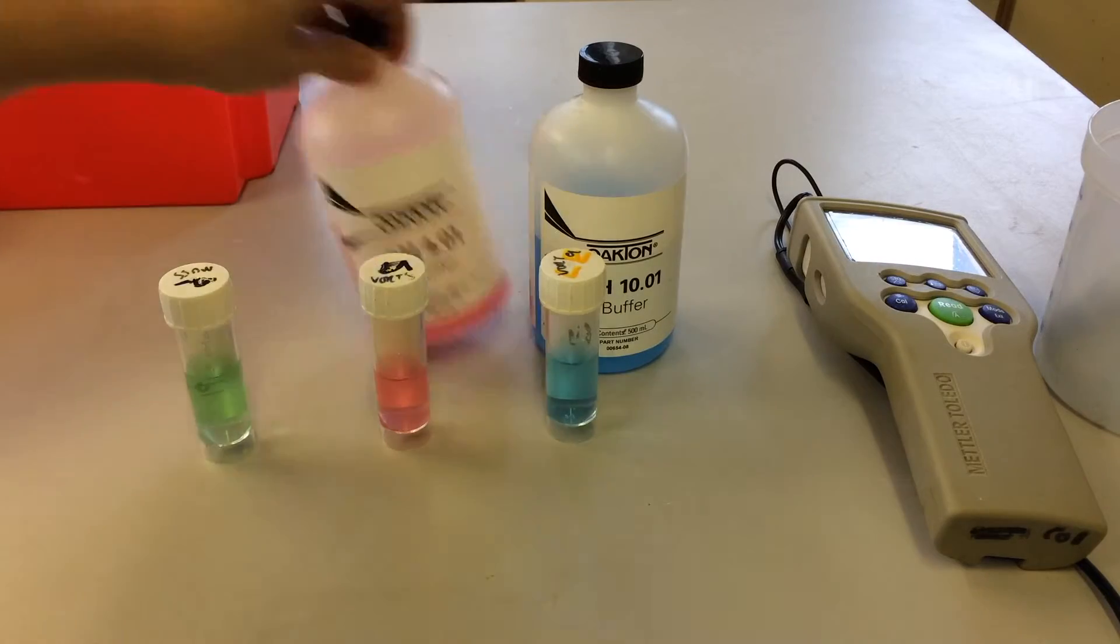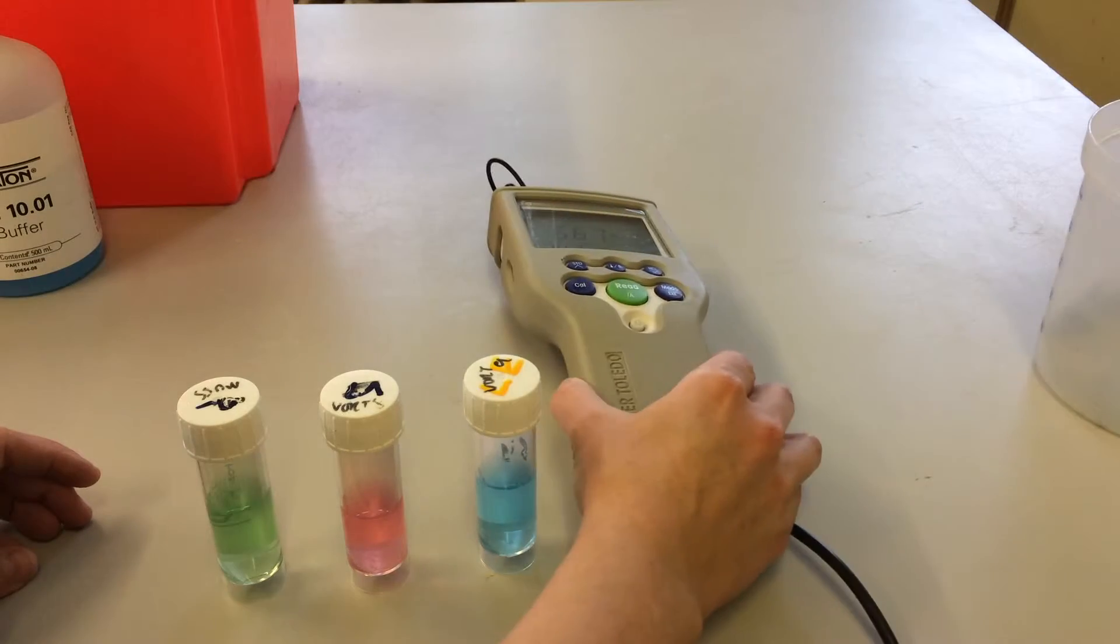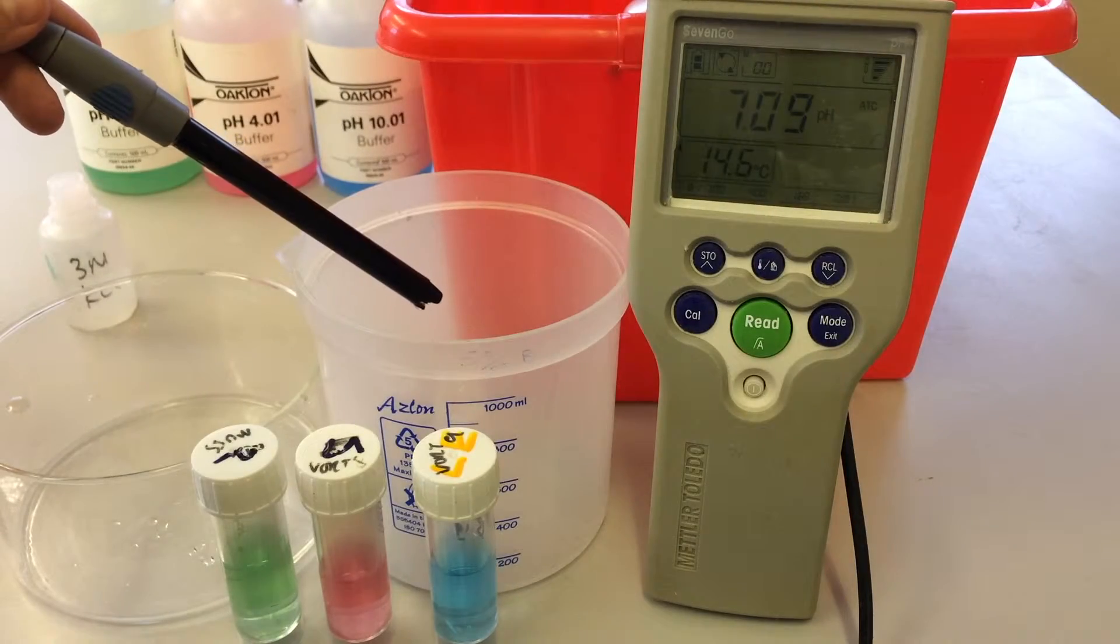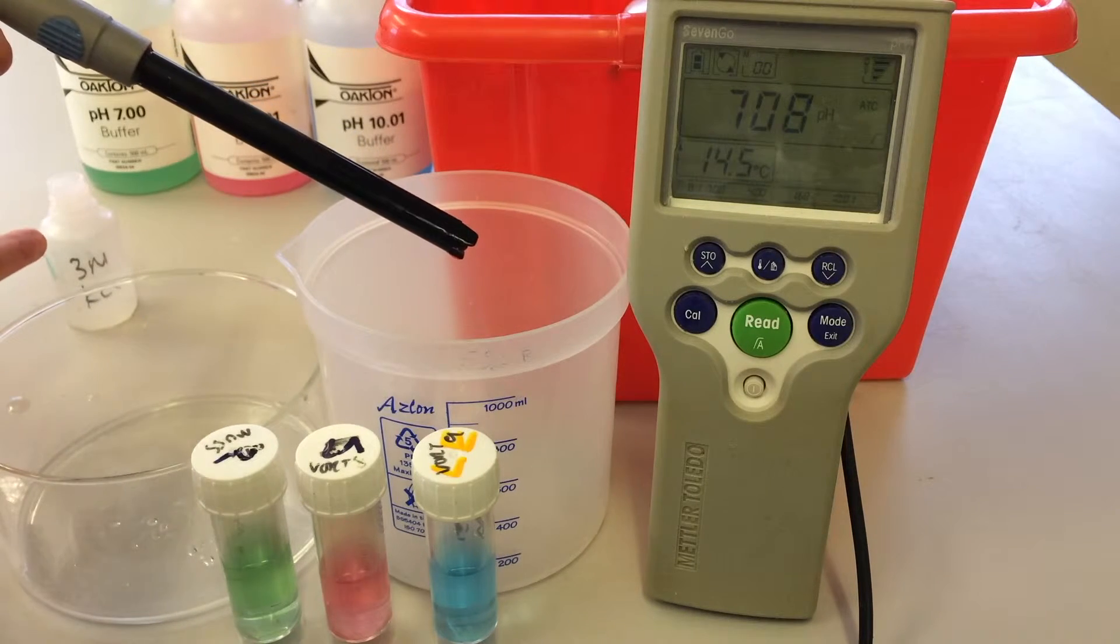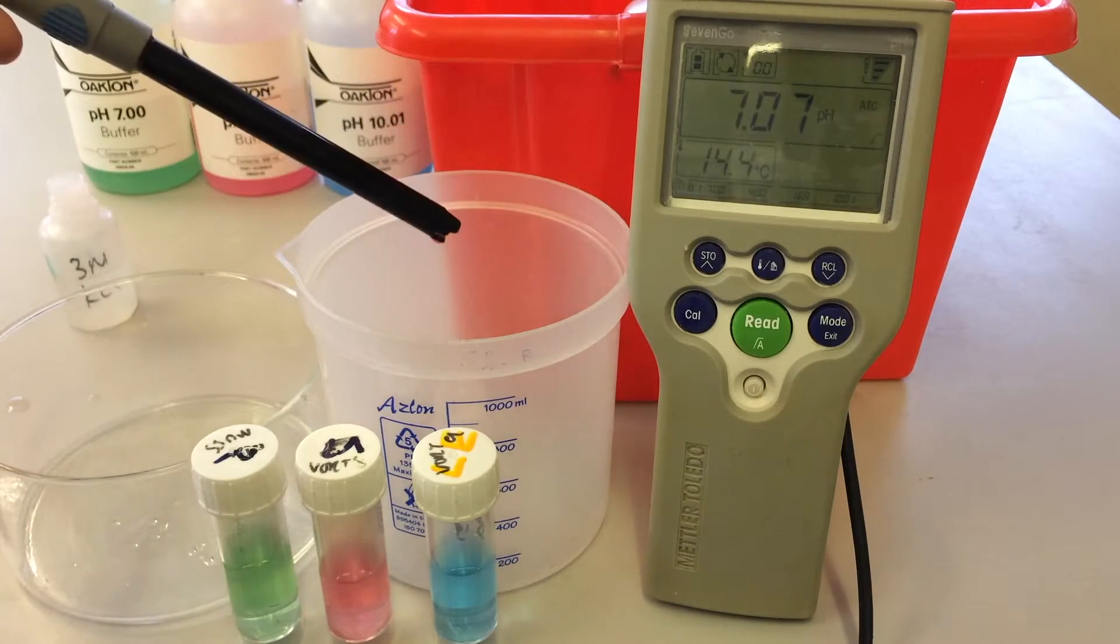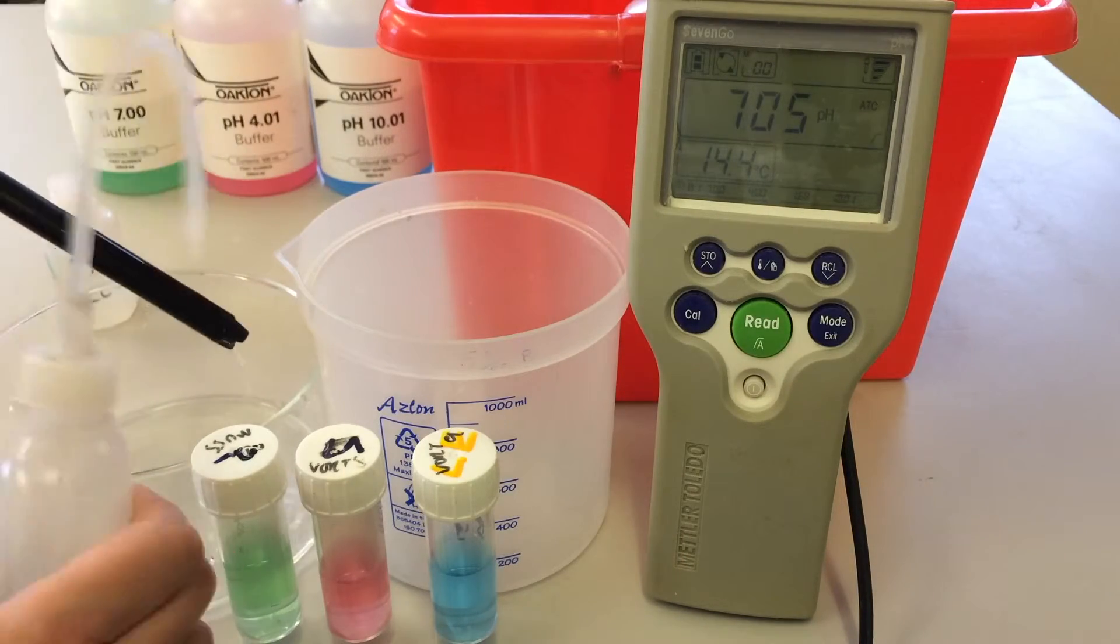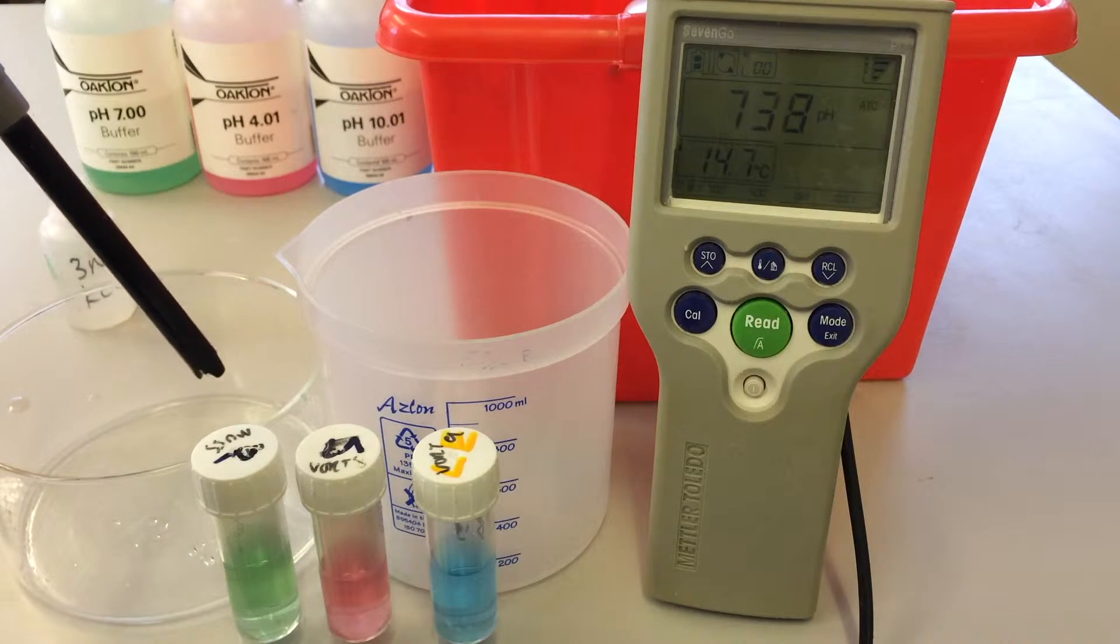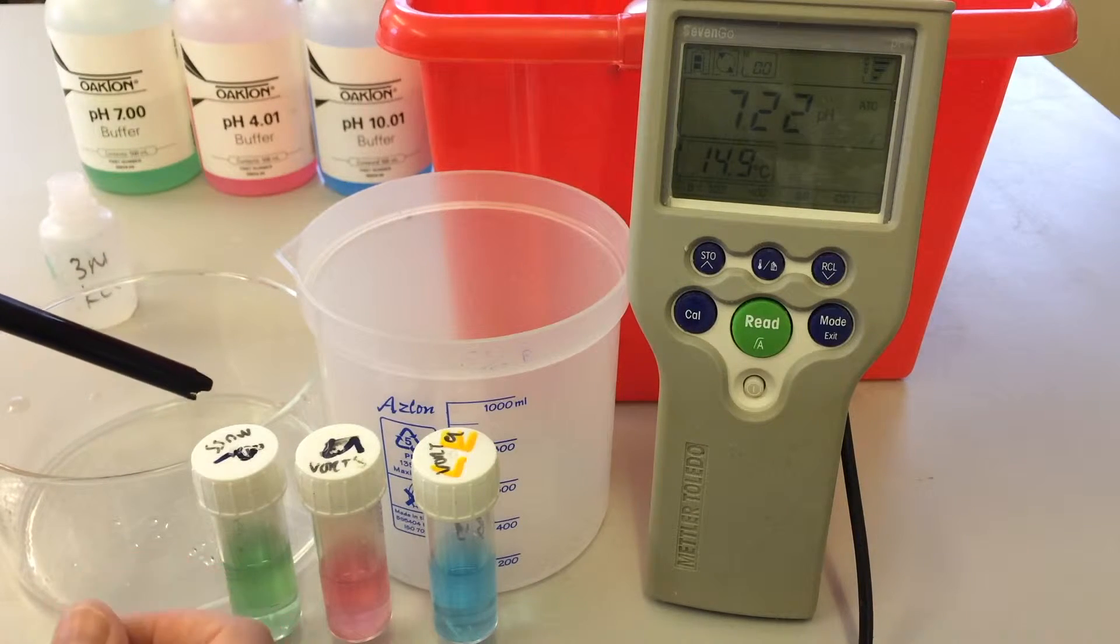So now we're going to calibrate our pH. I've just taken this probe out of this three molar potassium chloride solution, so I'm going to give this a rinse with distilled water first. Giving it a rinse, give it a gentle shake to get excess fluid from the end here, and then I'm going to place it into the first calibrating buffer.